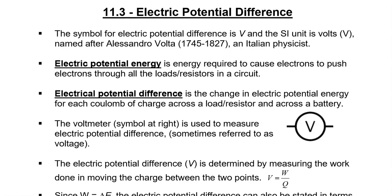The symbol for electric potential difference is V. And just to confuse us, the SI unit is the same. It's also V for volts. Now, this is named after Alessandro Volta. He was an Italian physicist in the 18th century and in the beginning of the 19th century. And he made huge breakthroughs for us in the area of electricity. Electric potential energy is energy required to cause electrons to push electrons through all the loads, resistors in a circuit. So there are going to be some electrons that have more energy from the battery before they've gone through the resistor. And they're going to push the ones that have gone through the resistor to force them to get back to the battery to get more energy.